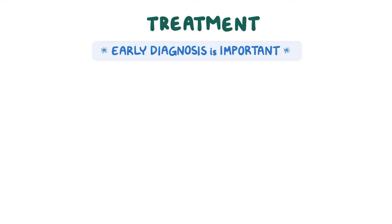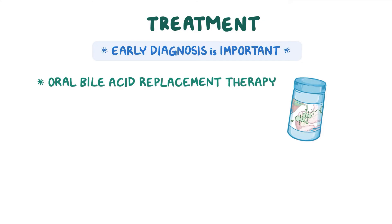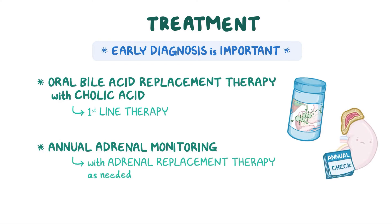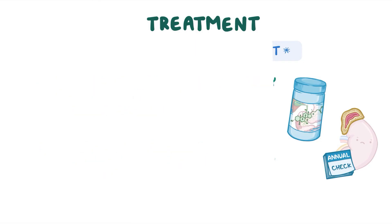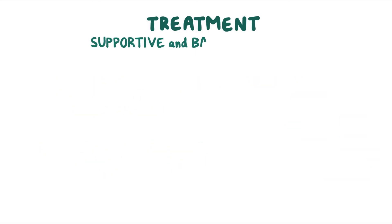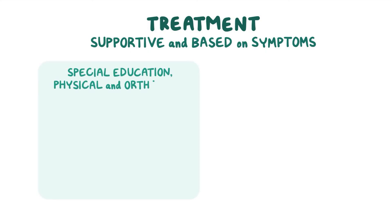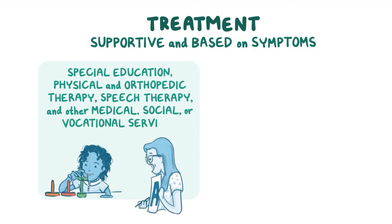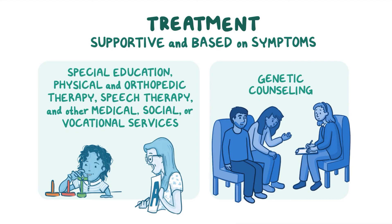Early diagnosis is important in treating ZSD. Treatment may involve oral bile acid replacement therapy with cholic acid as the first line therapy. Annual adrenal monitoring is recommended, with adrenal replacement therapy as needed. Subsequent treatment is supportive and varies based on symptoms. Affected individuals may benefit from special education, physical and orthopedic therapy, speech therapy, and other medical, social, or vocational services. Genetic counseling is recommended to help families understand the genetics and natural history of ZSD and provide psychosocial support.